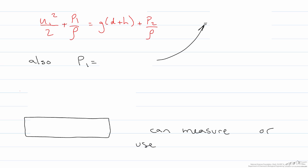And because of the fact that we explained above that p1 is equal to p2 plus rho gd, we can plug in right here for p1 and rewrite this equation on the left hand side as u1 squared over 2 plus p2 over rho plus gd.